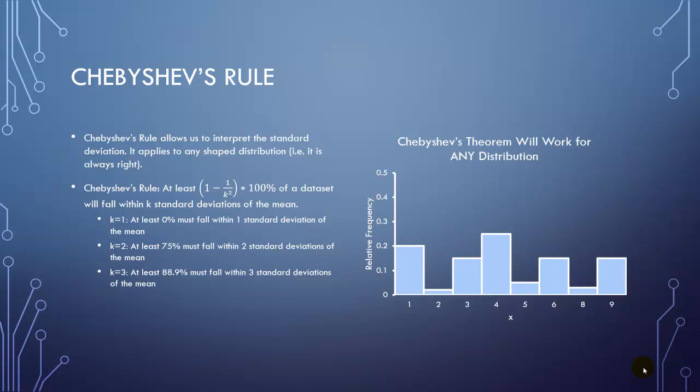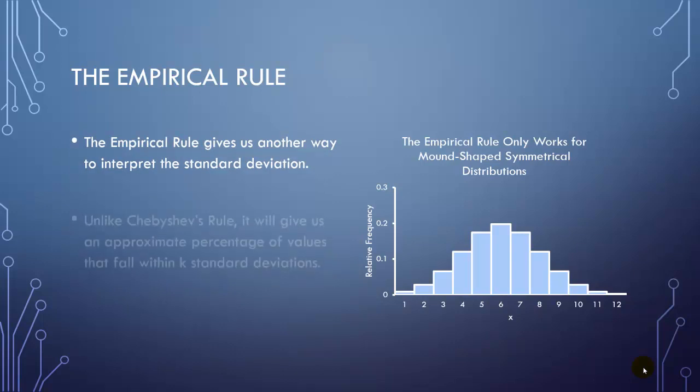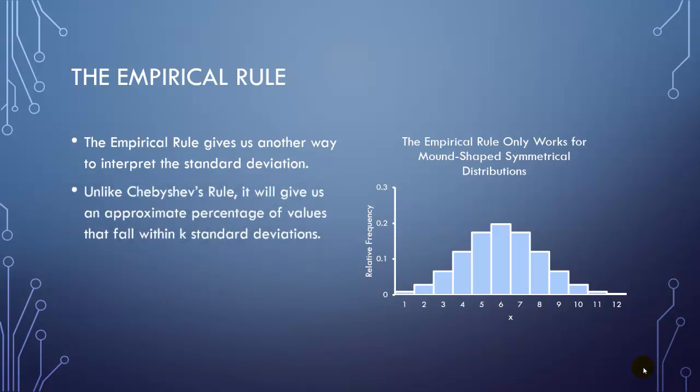So let's look at something called the empirical rule, which is more useful, but a little more limited. So the empirical rule only works for mound-shaped distributions, symmetrical and mound-shaped distributions. And we'll explore these a lot in Chapter 4. But it's giving us another way to interpret the standard deviation. The rule goes like this. Also, unlike Chebyshev's rule, it's going to give you approximate percentages that fall within k standard deviations rather than minimums. So it actually gives you a reasonable approximation to work with as long as your distribution is mound-shaped and symmetrical.